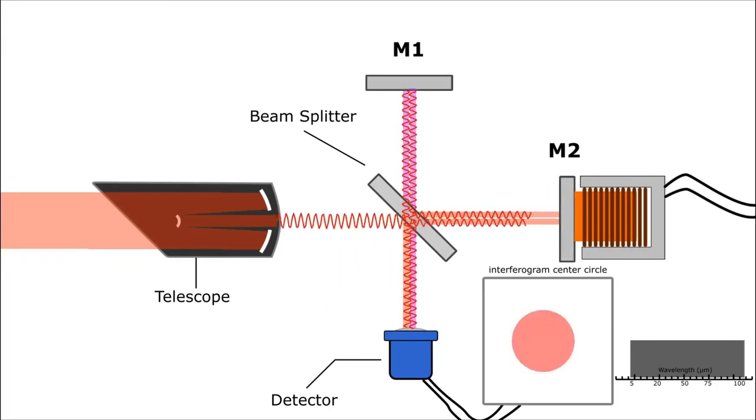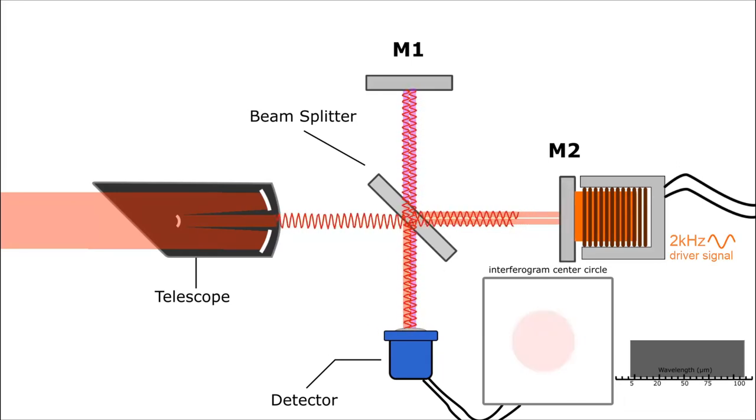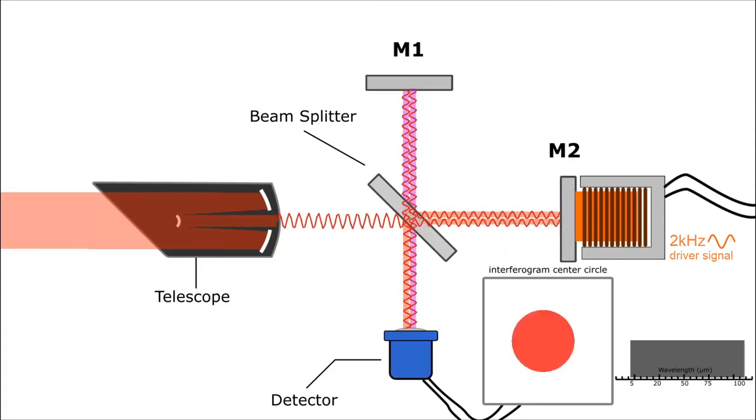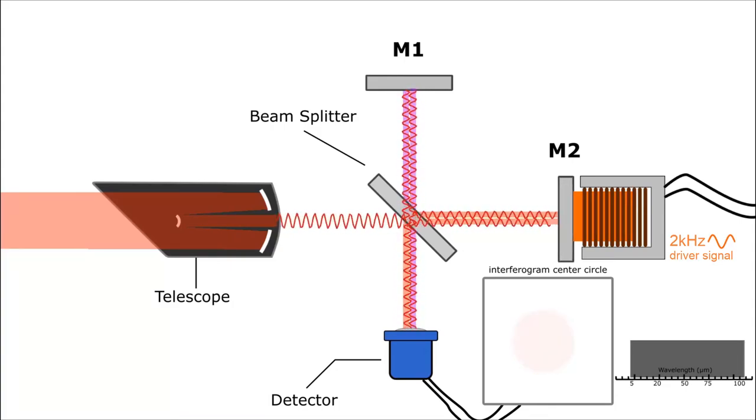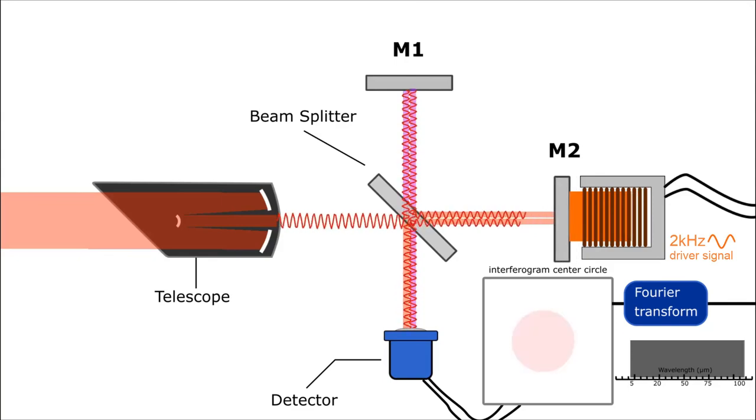The voice coil is fed by a 2 kilohertz sine wave voltage which means that the infrared spectrum is scanned 2000 times a second. Since the detector measures intensity over mirror distance, this data must be converted to intensity over frequency. So a Fourier transform is performed on the input signal before it leaves OTIS. After all, this is a Fourier transform spectrometer.